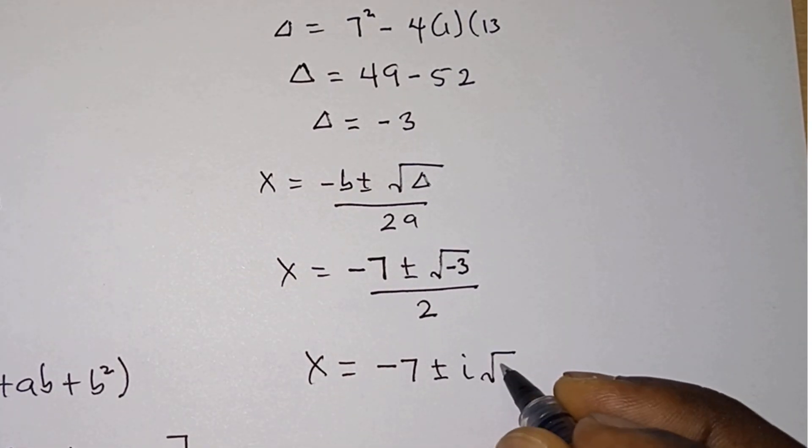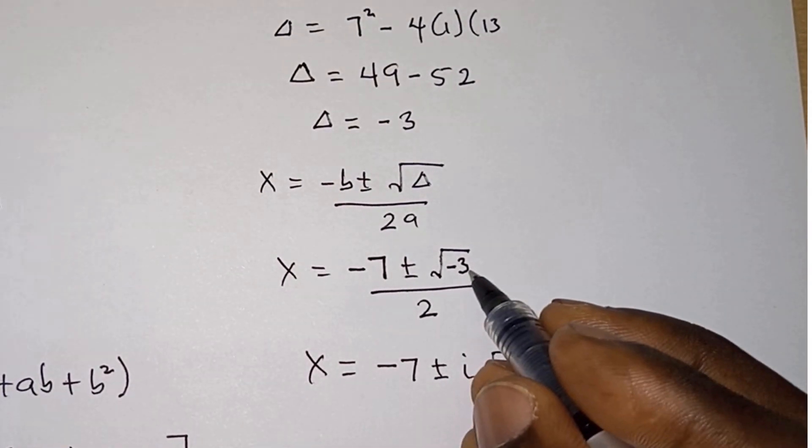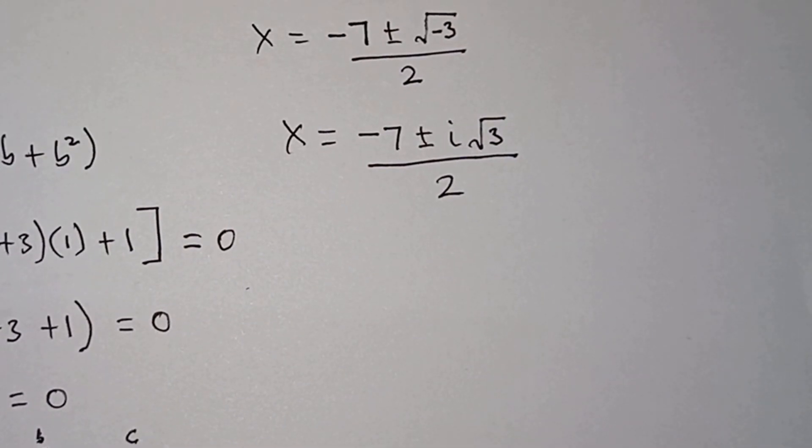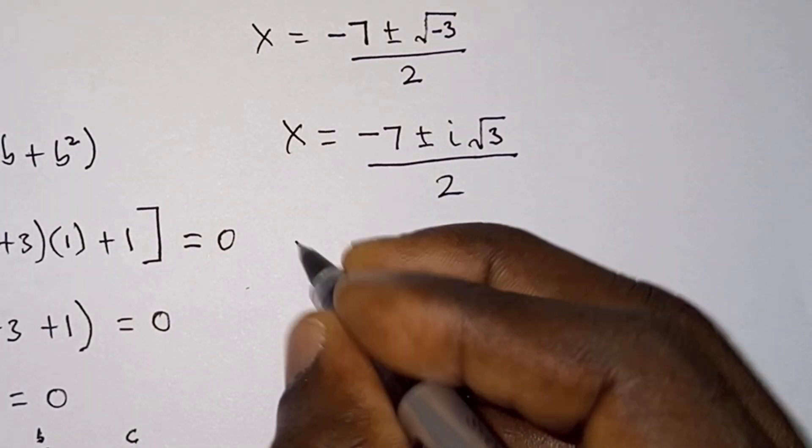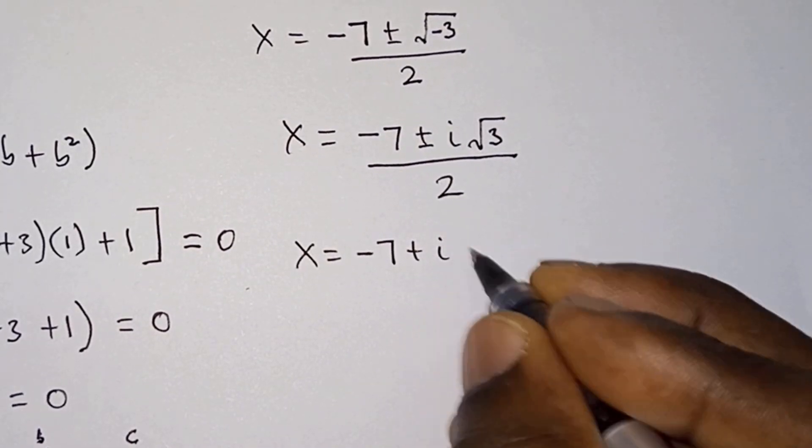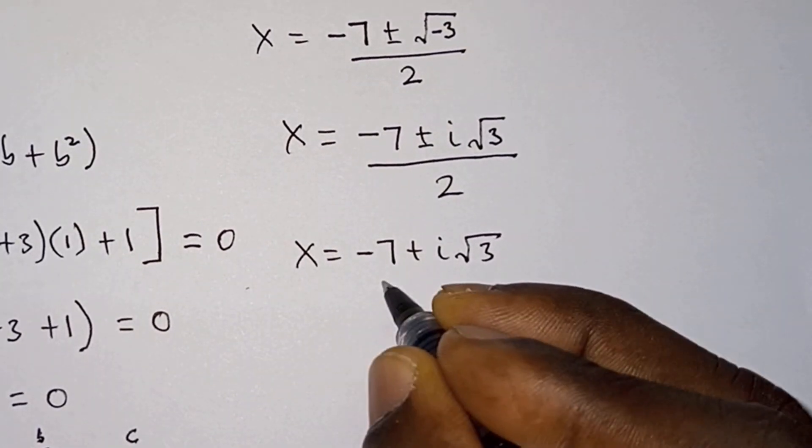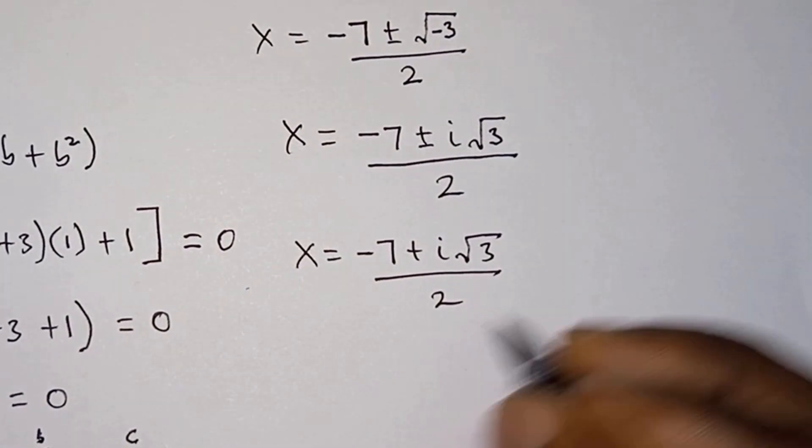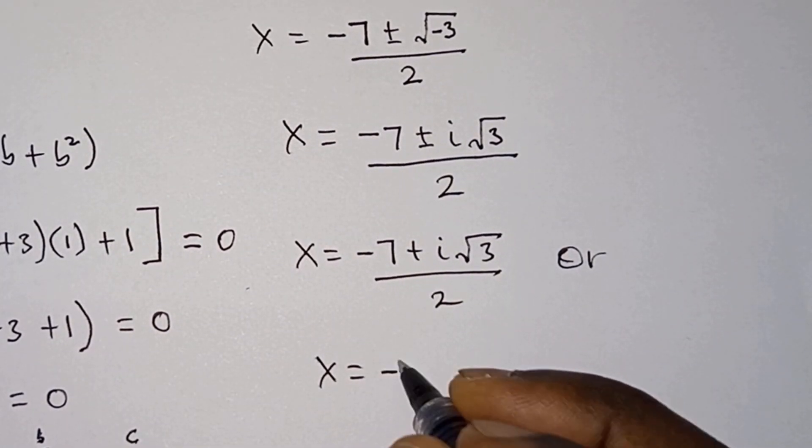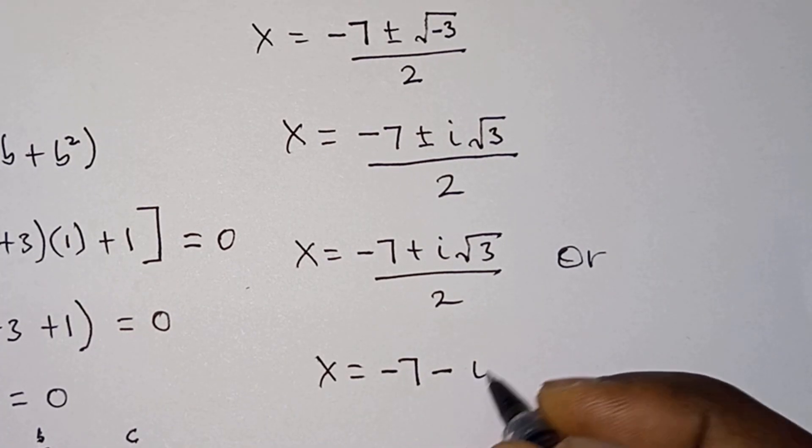Square root of negative 3 is i times square root of 3, divided by 2. So we have two complex solutions for x. It is either x equals negative 7 plus i√3 over 2, or x equals negative 7 minus i√3 over 2.